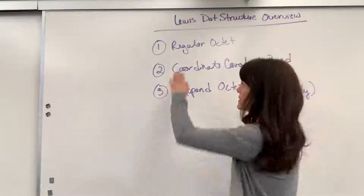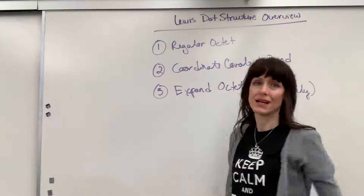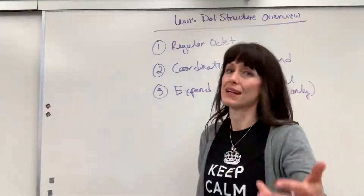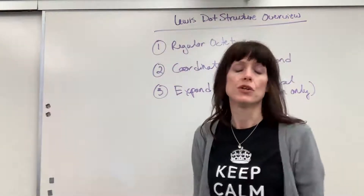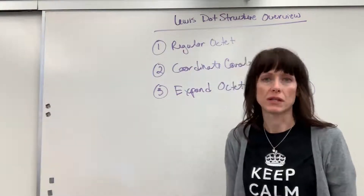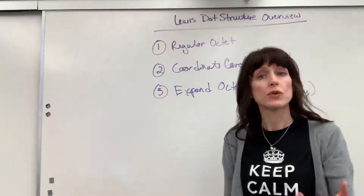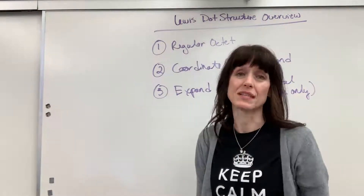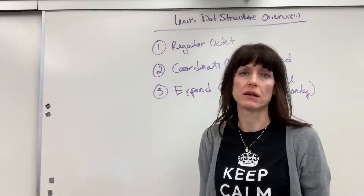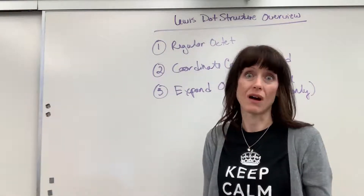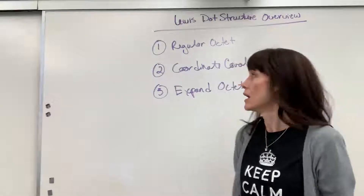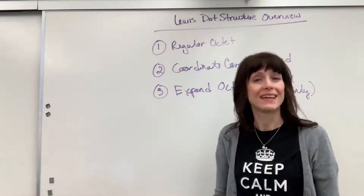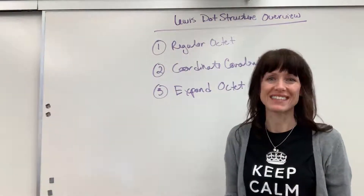A lot of this is just exposure, experience, and practice. And you will see those three steps — octet, then coordinate covalent, and then if you can't do those, you move into the expanded octet. So if you want a reference just to look over examples of expanded octets, there's a lot in the attached document. Thanks so much, have a good day.